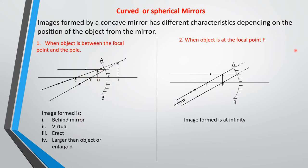Case two: when the object is at the focal point. The image formed will be at infinity — the image cannot be located. The rays are parallel after reflection, so the image cannot be located.